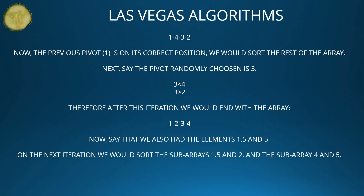Now say we also add the elements 1.5 and 5. On the next iteration, we would sort the subarrays [1.5, 2] and [4, 5]. We wouldn't touch 3 because it would be placed between these four variables.